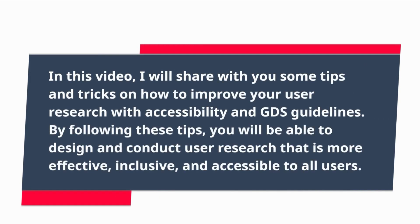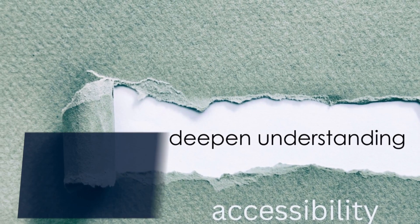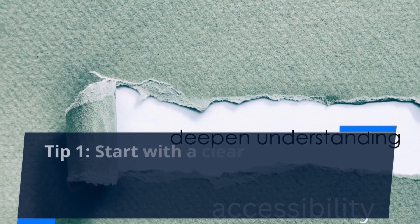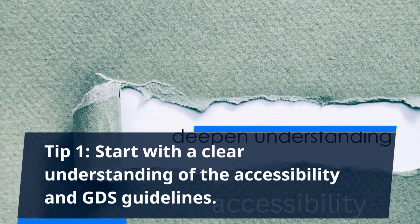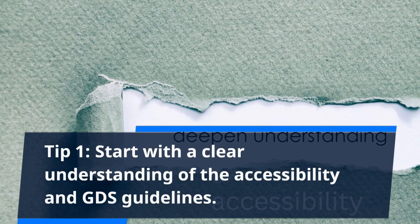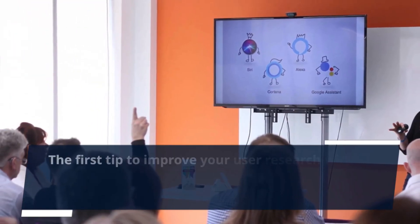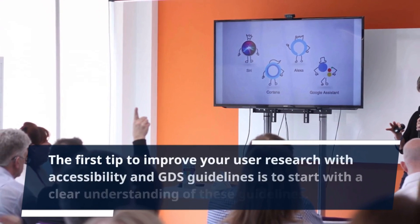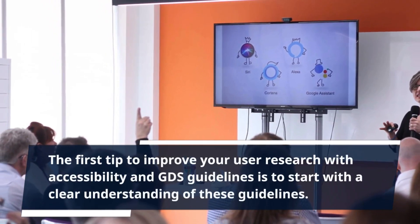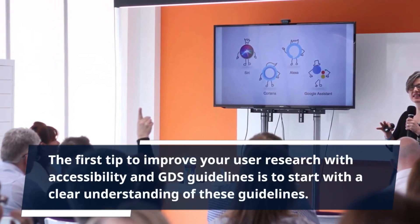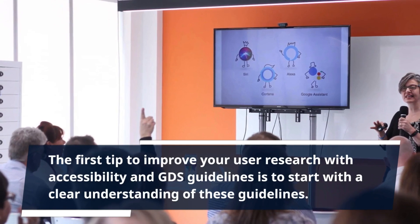By following these tips, you will be able to design and conduct user research that is more effective, inclusive, and accessible to all users. Tip 1: Start with a Clear Understanding of the Accessibility and GDS Guidelines. The first tip is to start with a clear understanding of these guidelines.